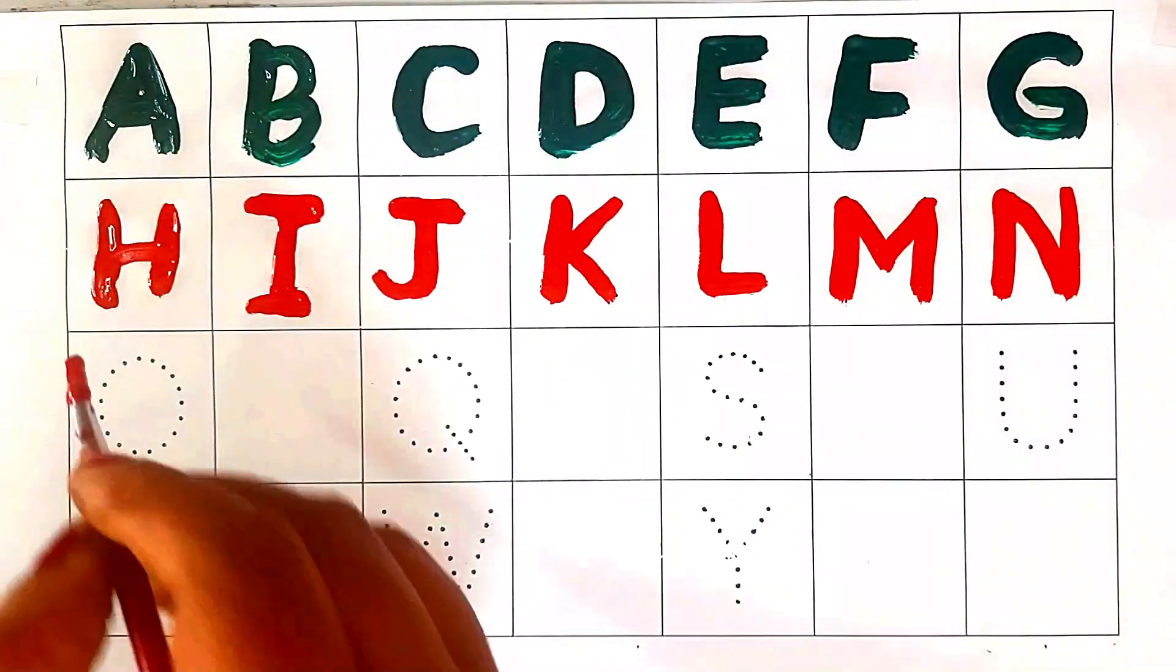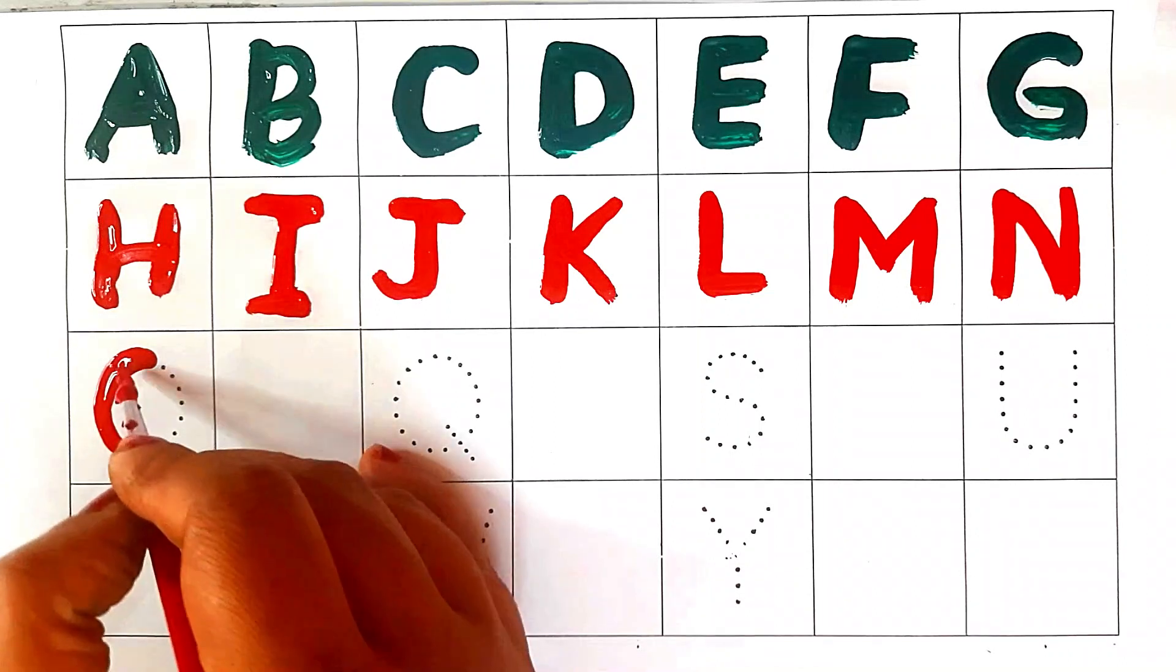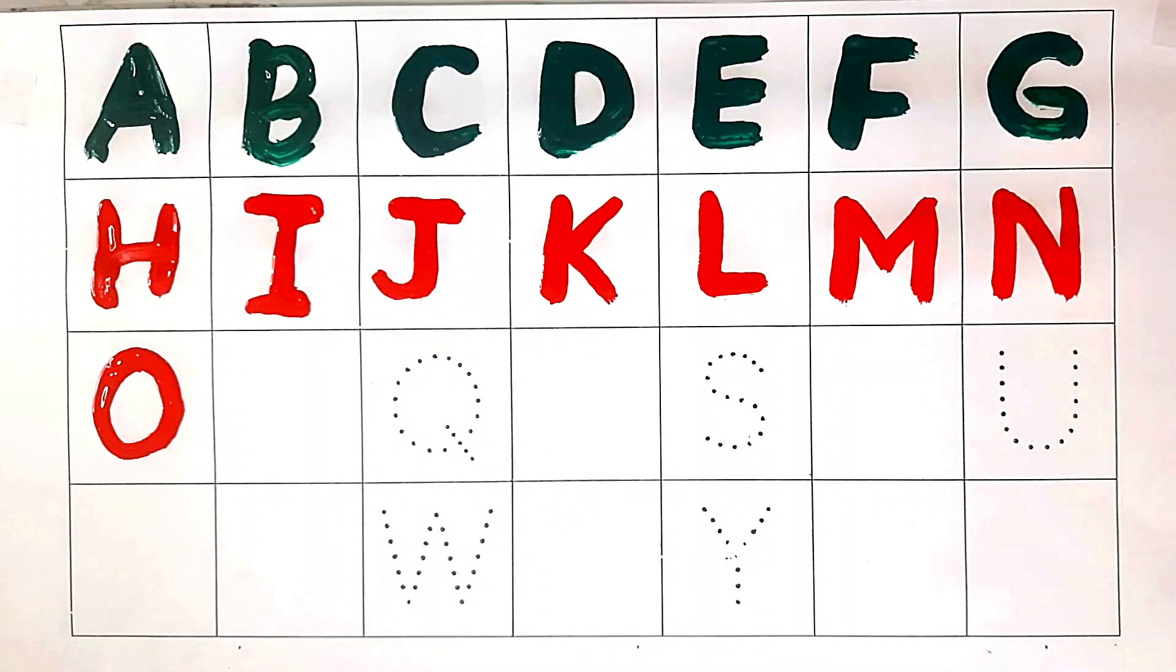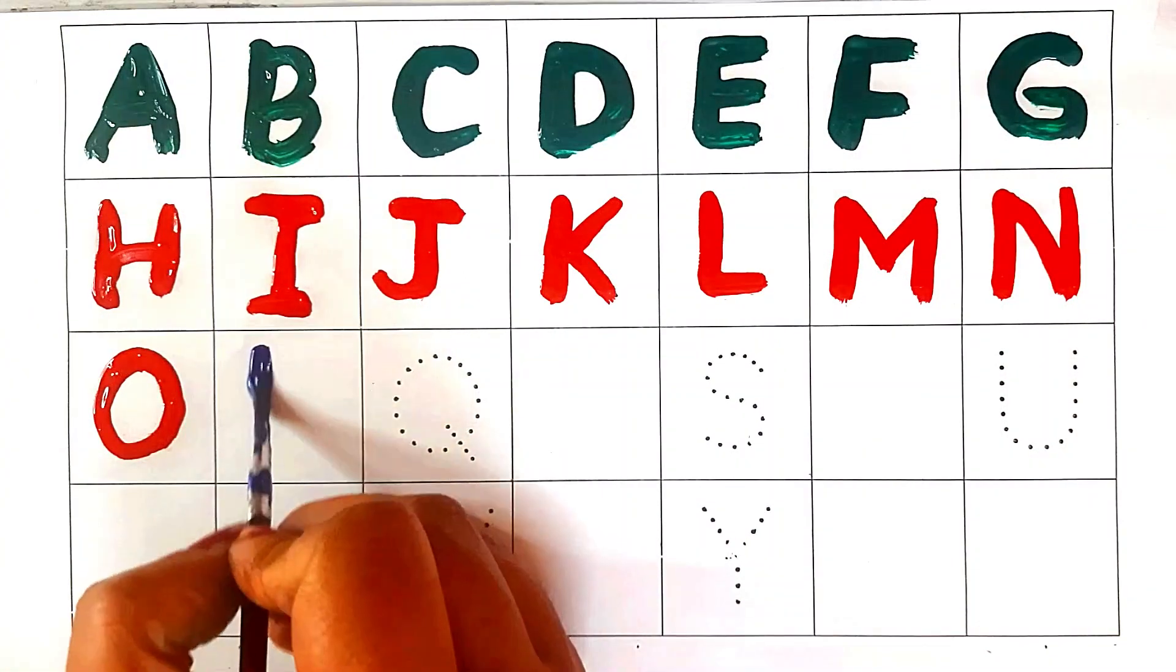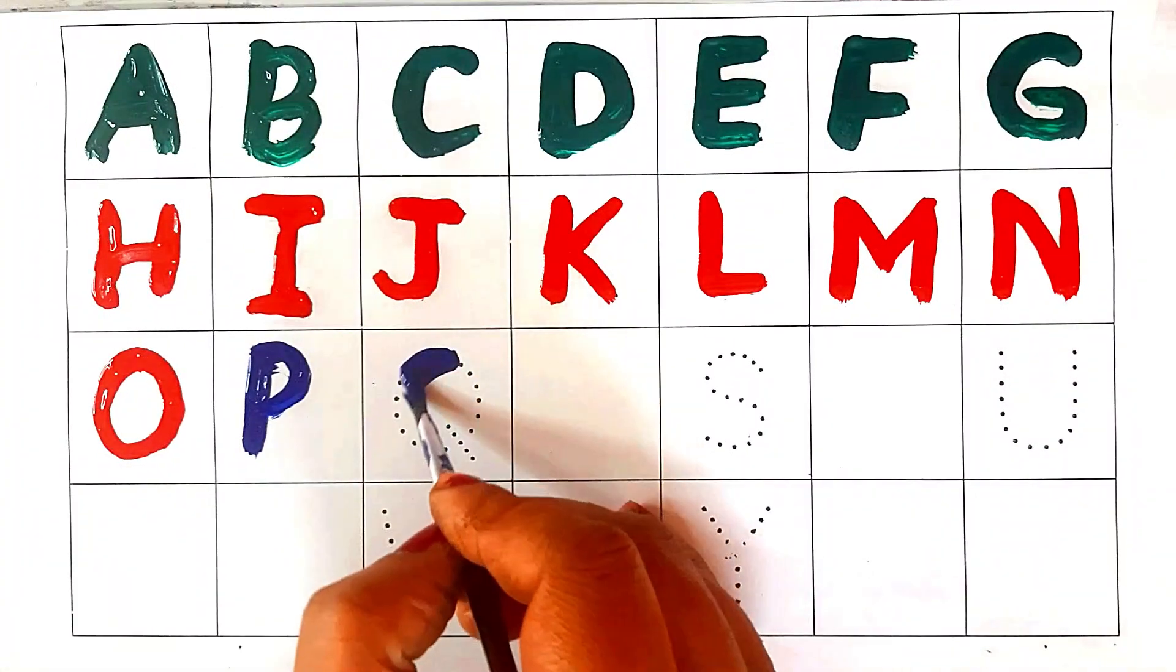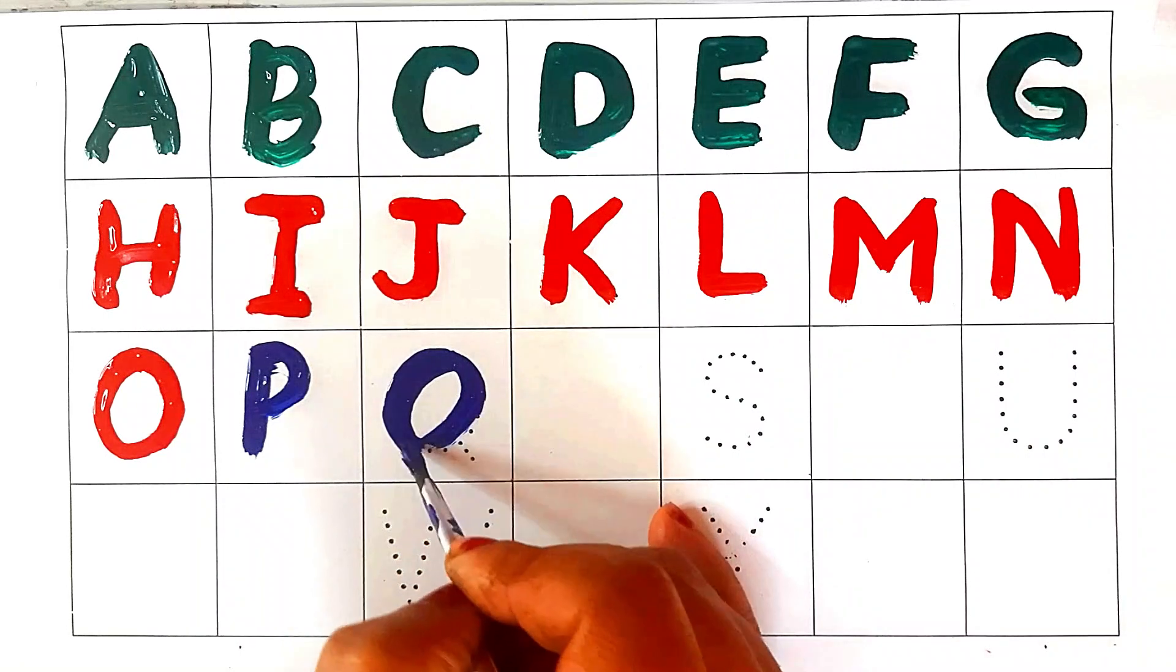Red color. O, O for orange. Blue color. P, P for orange. Blue color. Q, Q for queen.